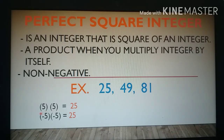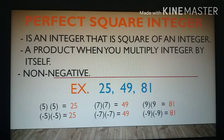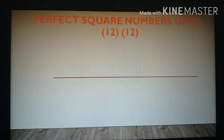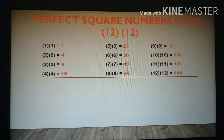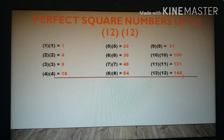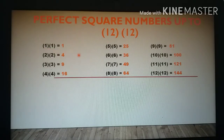Perfect square numbers up to 12: 4, 9, 16, 25, 36, 49, 64, 81, 100, 121, and 144. These numbers are considered perfect squares because there are numbers when you multiply by itself the answer is that number.